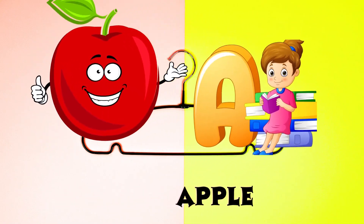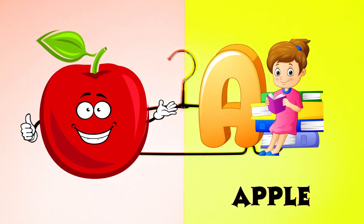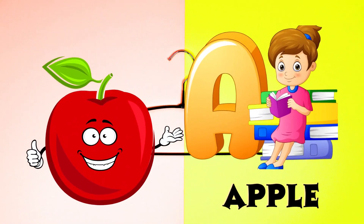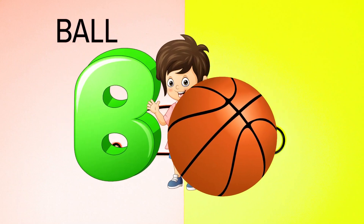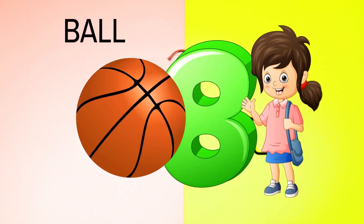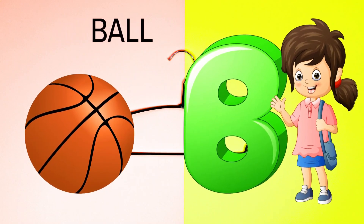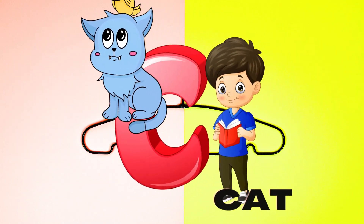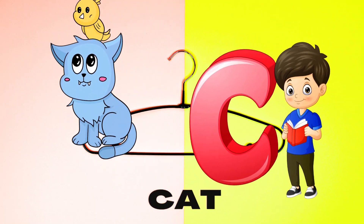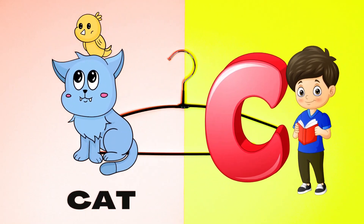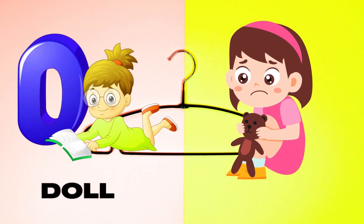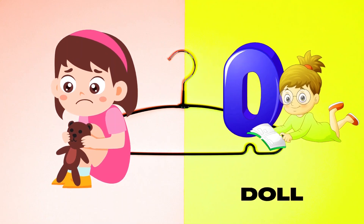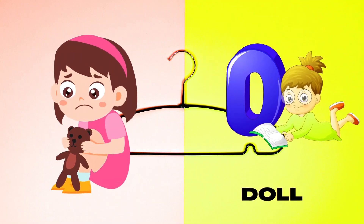A is for Apple, A-A-Apple. B is for Ball, B-B-Ball. C is for Cat, C-C-Cat. D is for Doll, D-D-Doll.